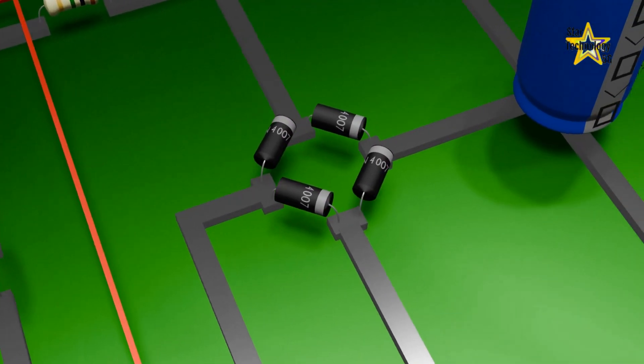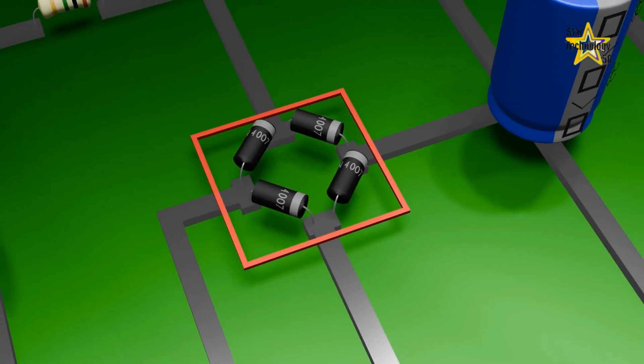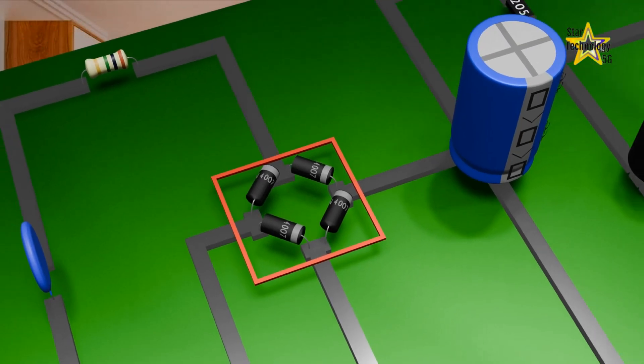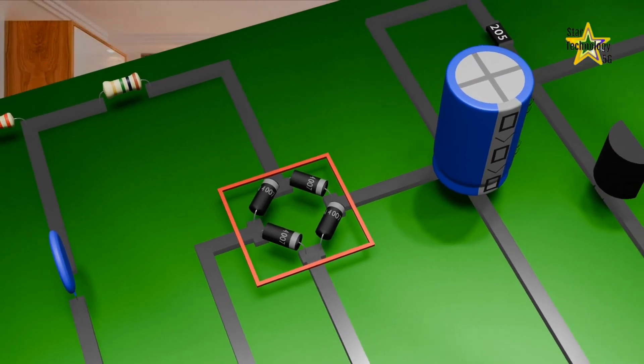Then there is a bridge rectifier made of 41 and 4007 PN junction diodes. This bridge rectifier converts the AC voltages into pulsating DC voltages.